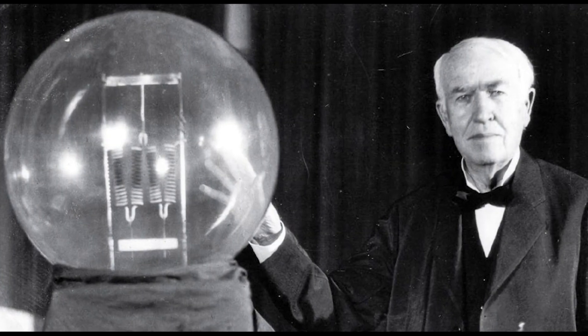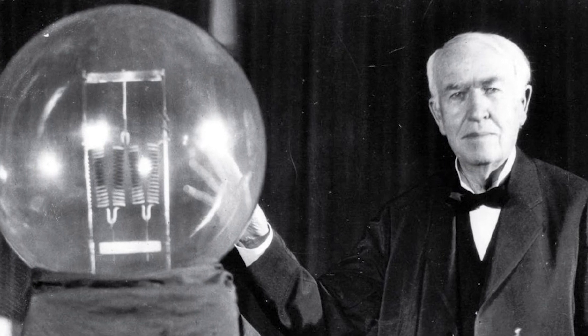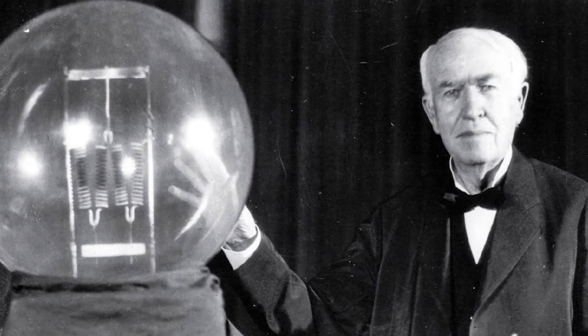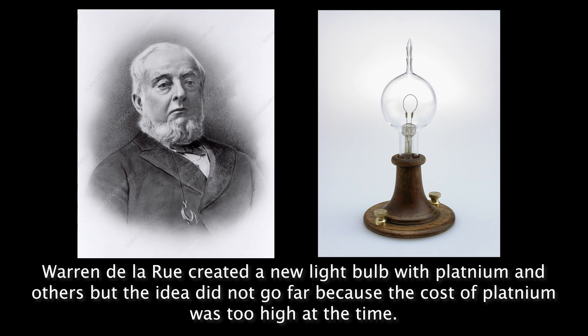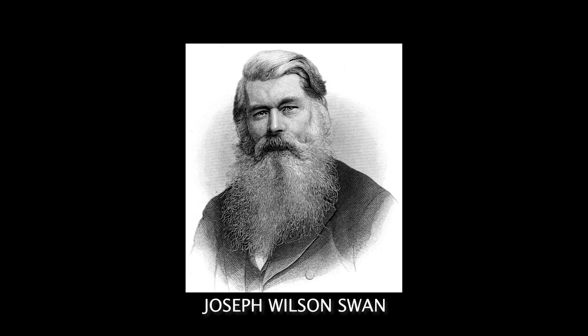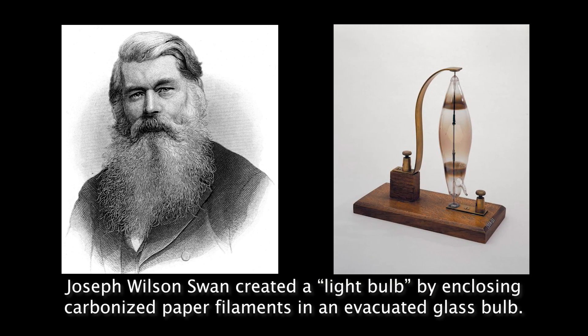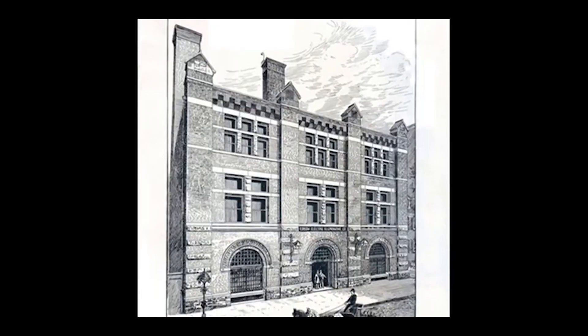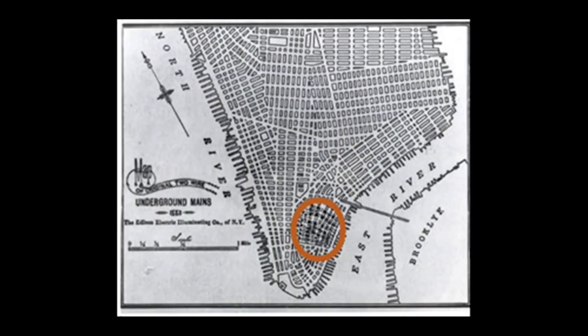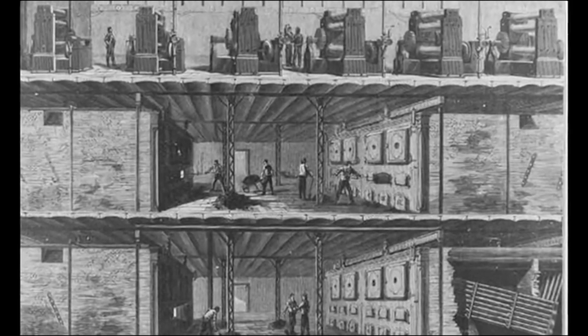Thomas Edison was able to create a fully functional light bulb in 1879. Earlier versions made by Warren De La Rue and Joseph Swan had the light bulb concept down, but their inventions were not suited for practical use. The first ever power plant used to create electricity was opened in New York by Thomas Edison in 1882.